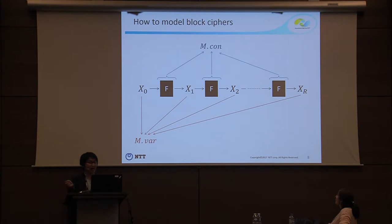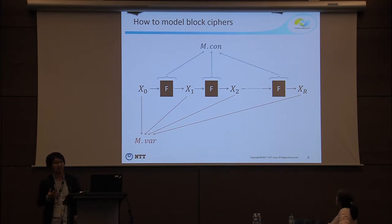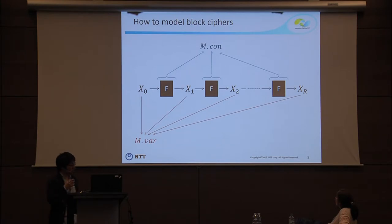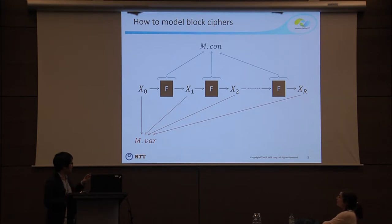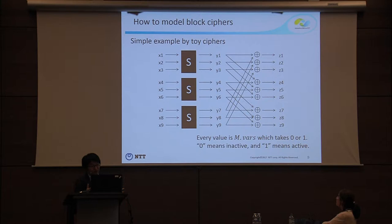First, I explain how to model a block cipher. This is an example of an r-round cipher. Here, x_i is the input of the i-th round function, and f is the round function. We represent the input of each round function using binary variables, and the round function is represented using constraints. We explain this by using a toy example cipher.